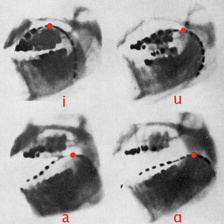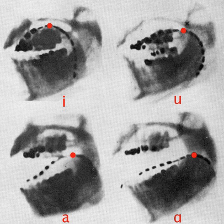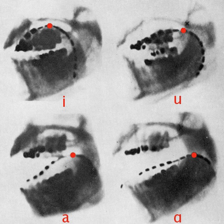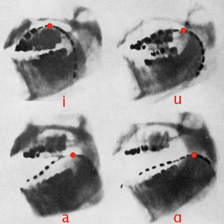The IPA defines a vowel as a sound which occurs at a syllable center. The IPA maps the vowels according to the position of the tongue. The vertical axis of the chart is mapped by vowel height — vowels pronounced with the tongue lowered are at the bottom, and vowels pronounced with the tongue raised are at the top. For example, the first vowel in 'father' is at the bottom because the tongue is lowered in this position, while I, the vowel in 'meet,' is at the top because the sound is said with the tongue raised to the roof of the mouth.